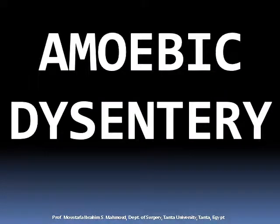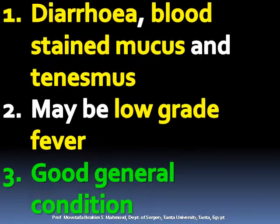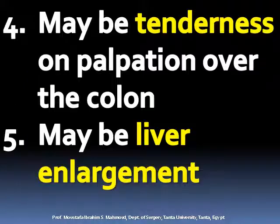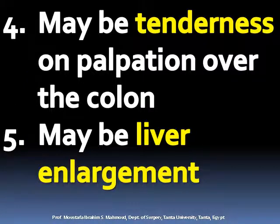Amoebic dysentery presents with diarrhea, blood-stained mucus, and tenesmus. There may be low-grade fever with good general condition, and tenderness on palpation over the colon. There may also be liver enlargement.